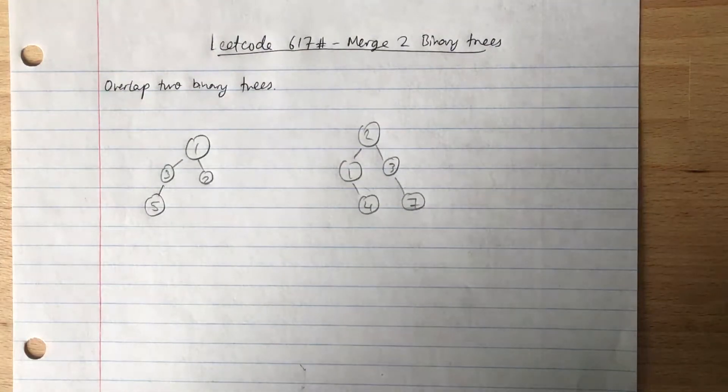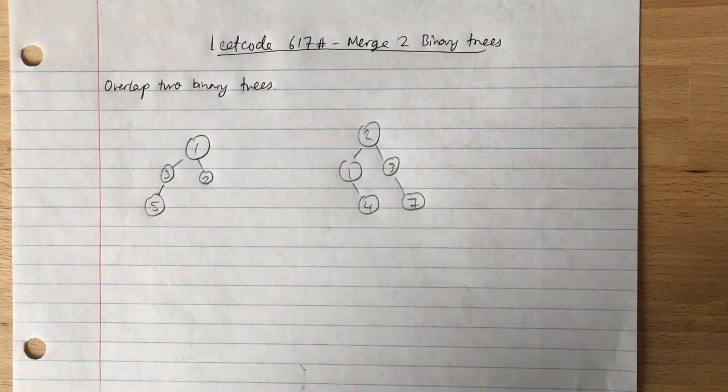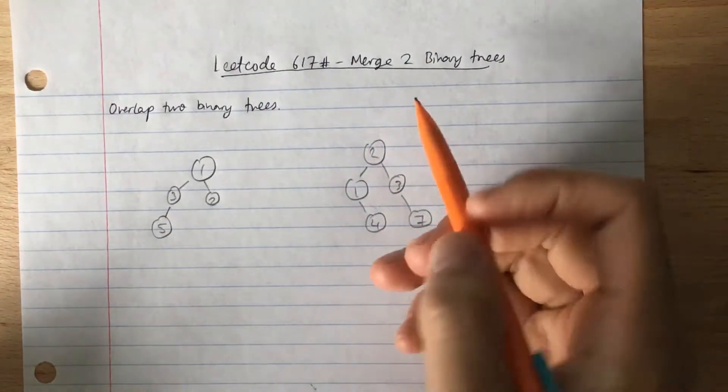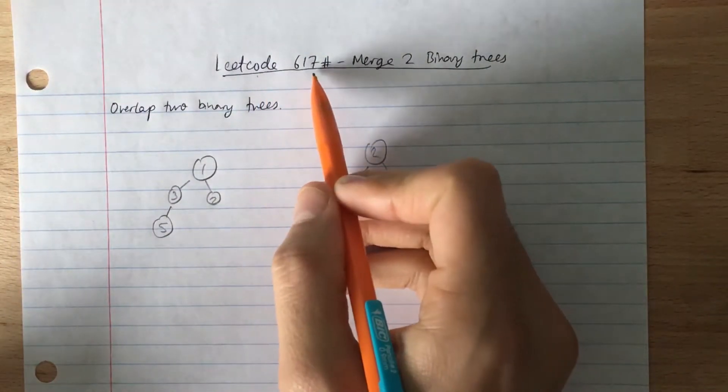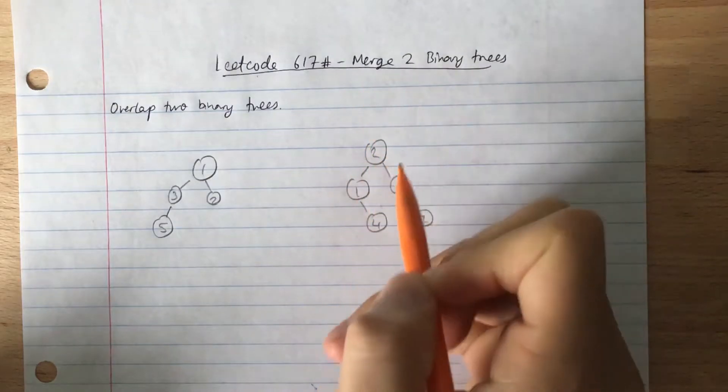Hey guys, welcome to another episode of the Algorithmic Illustrator. In this particular episode, we're going to go over LeetCode 617, basically merging two binary trees.